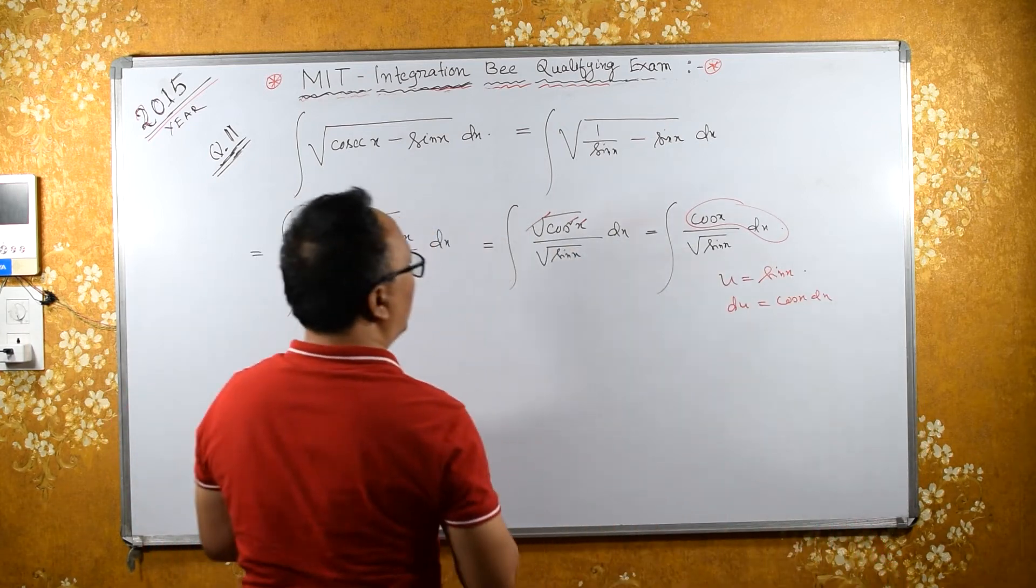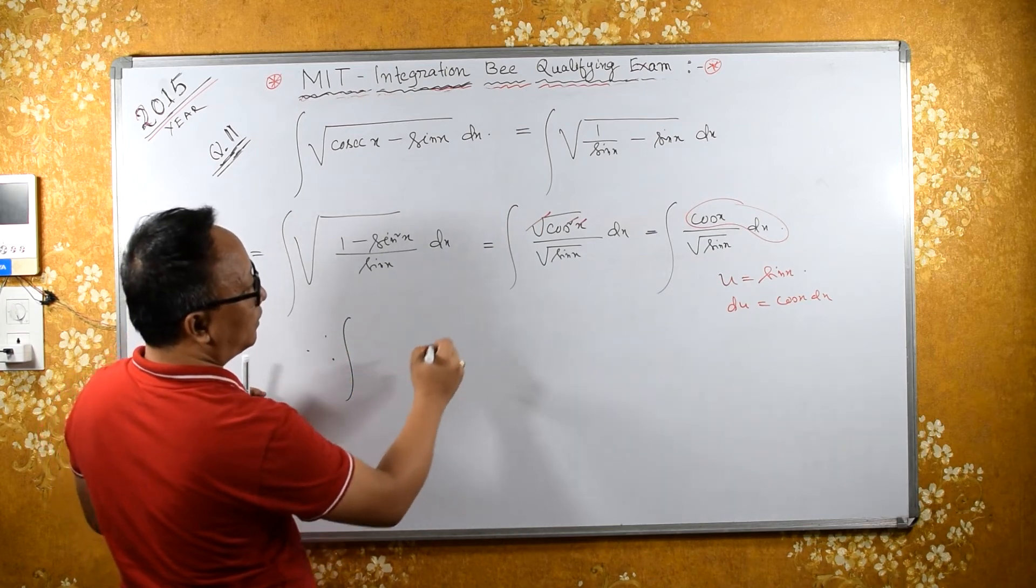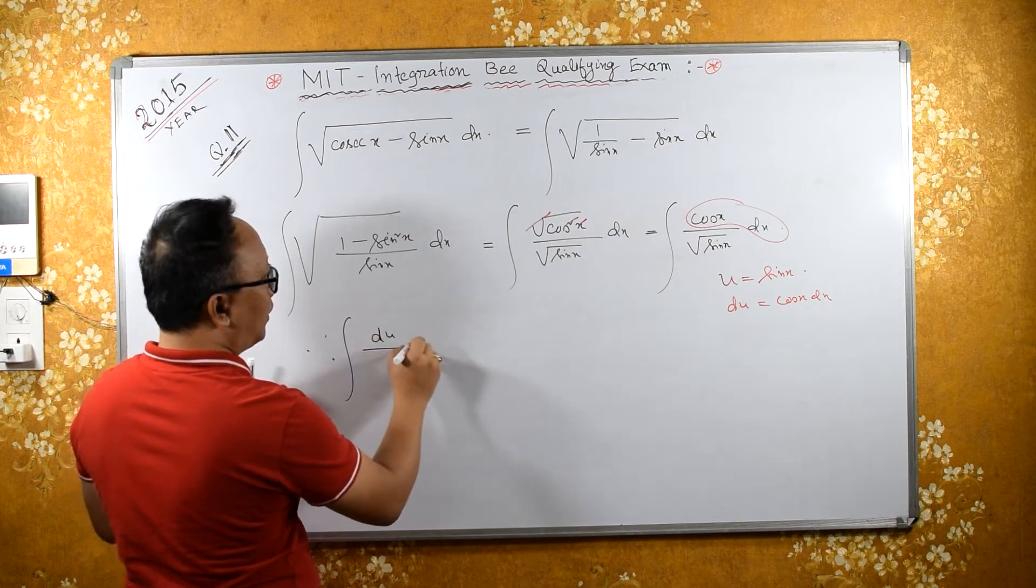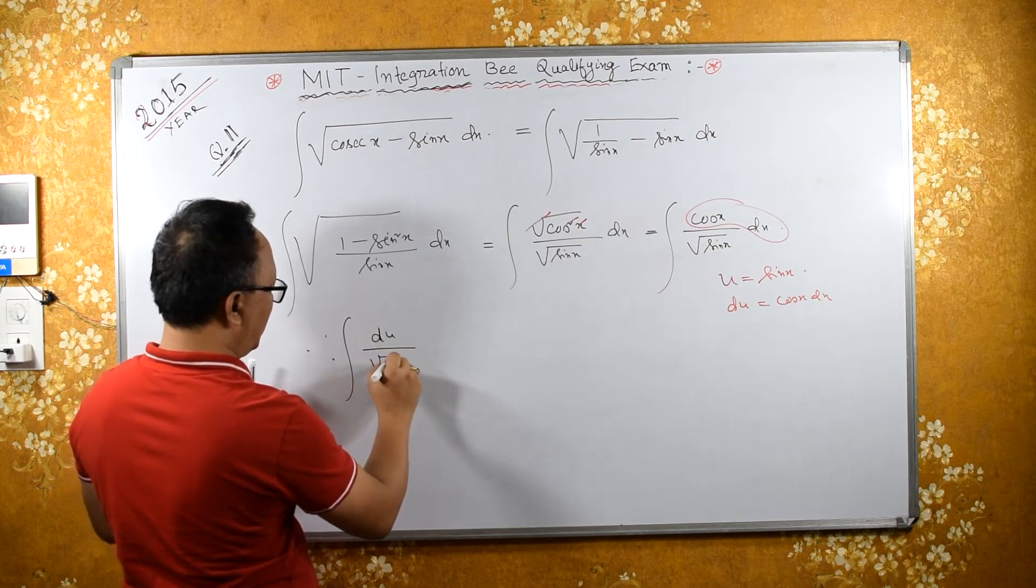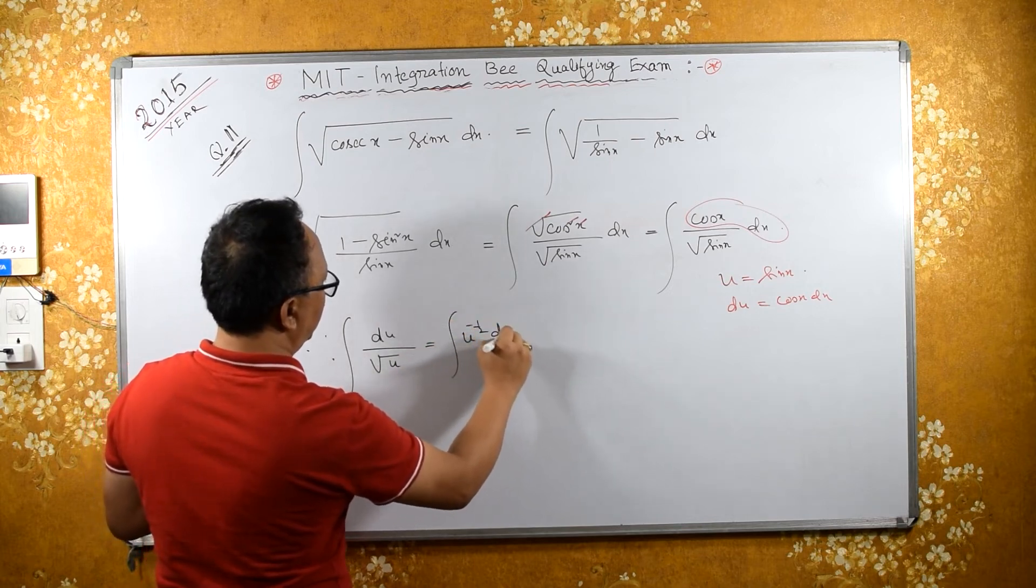Therefore, integral of du upon square root of u. This is the same as u raised to minus half du.